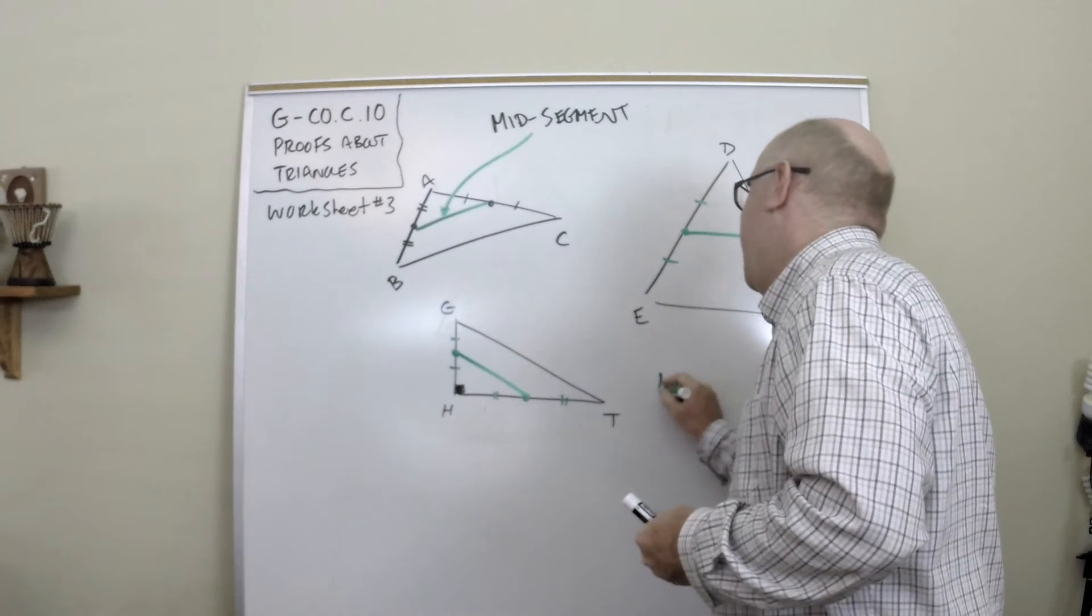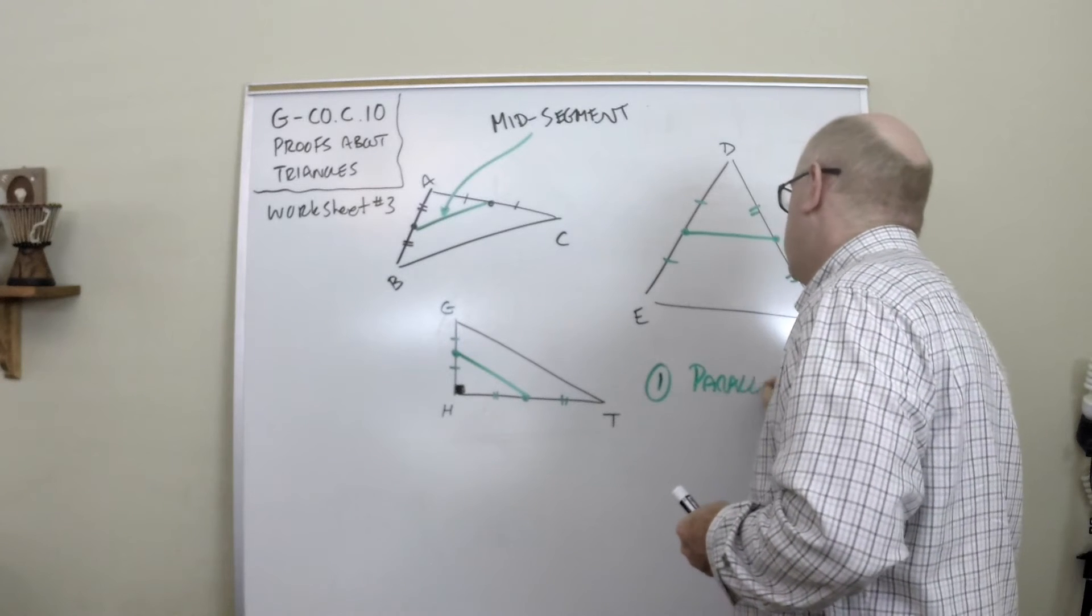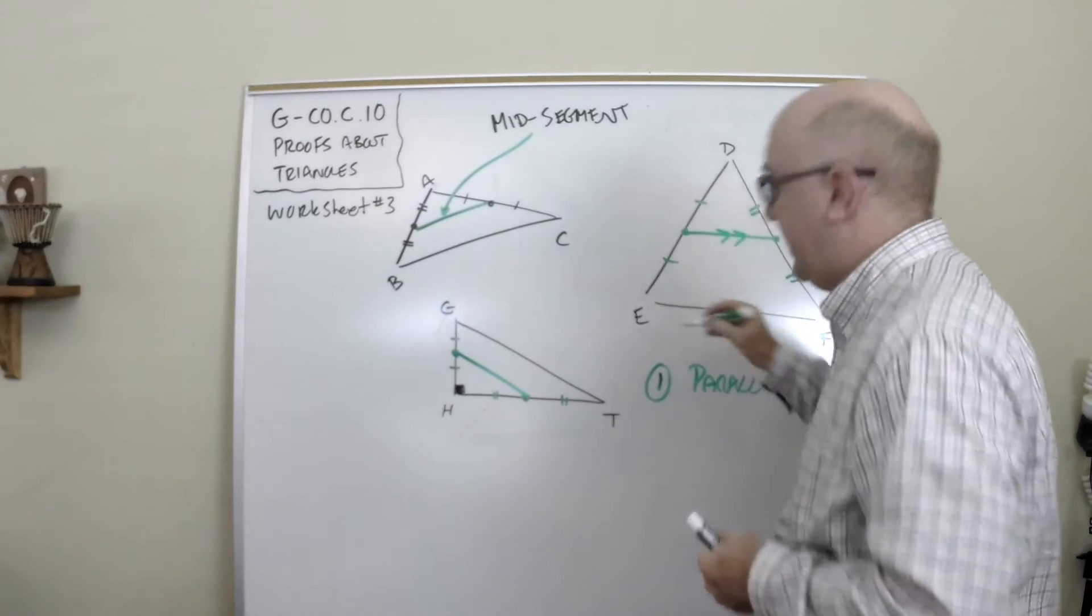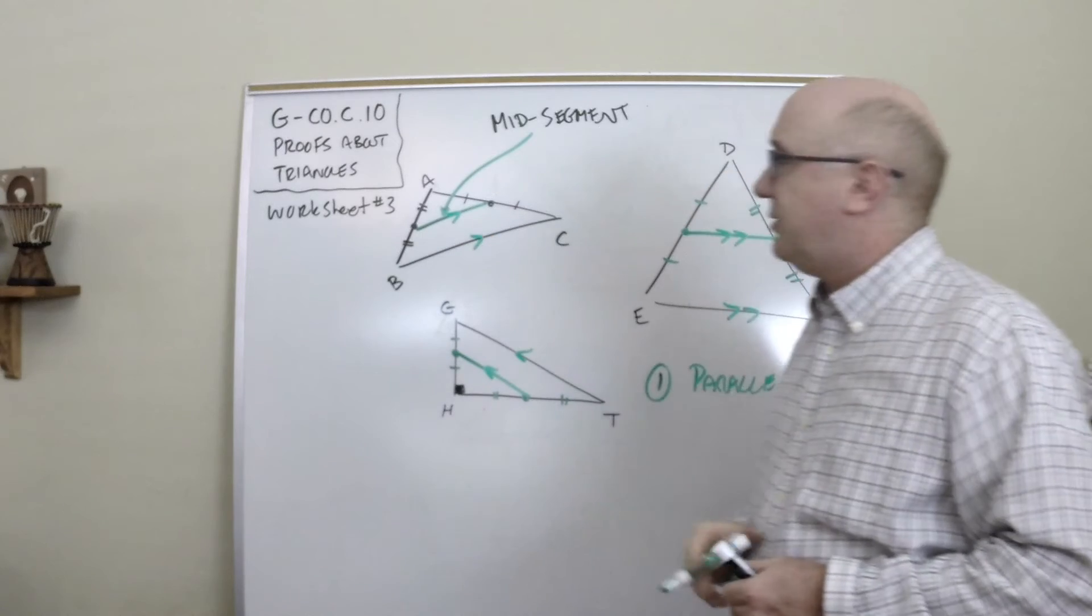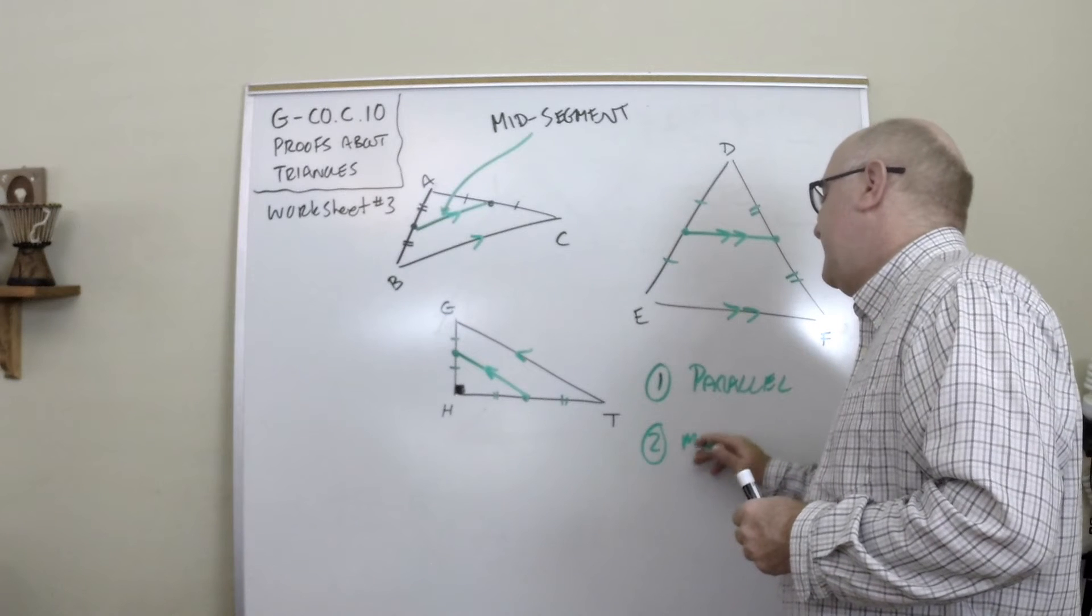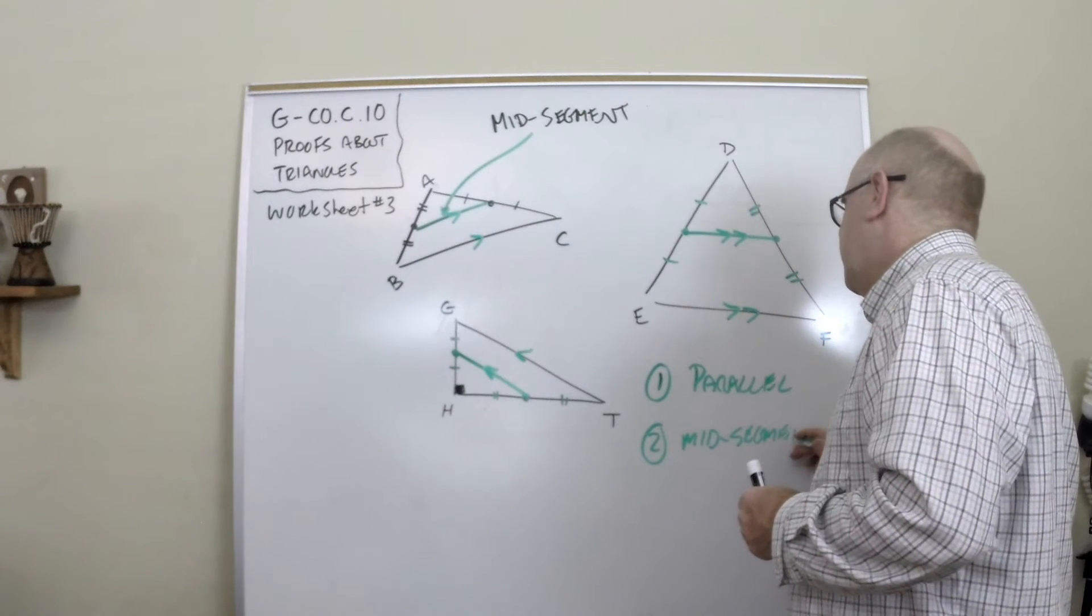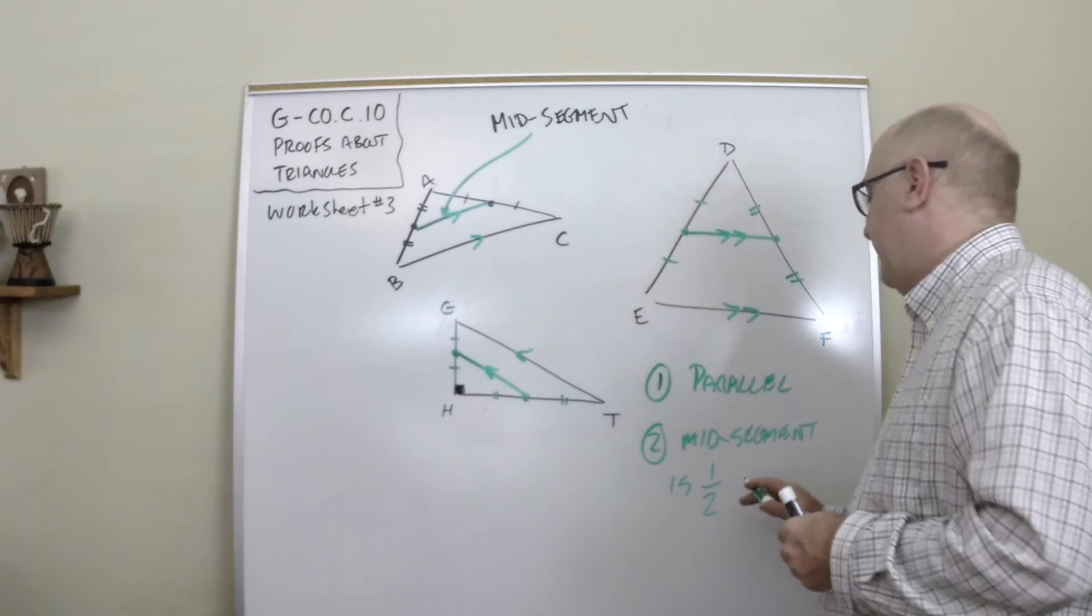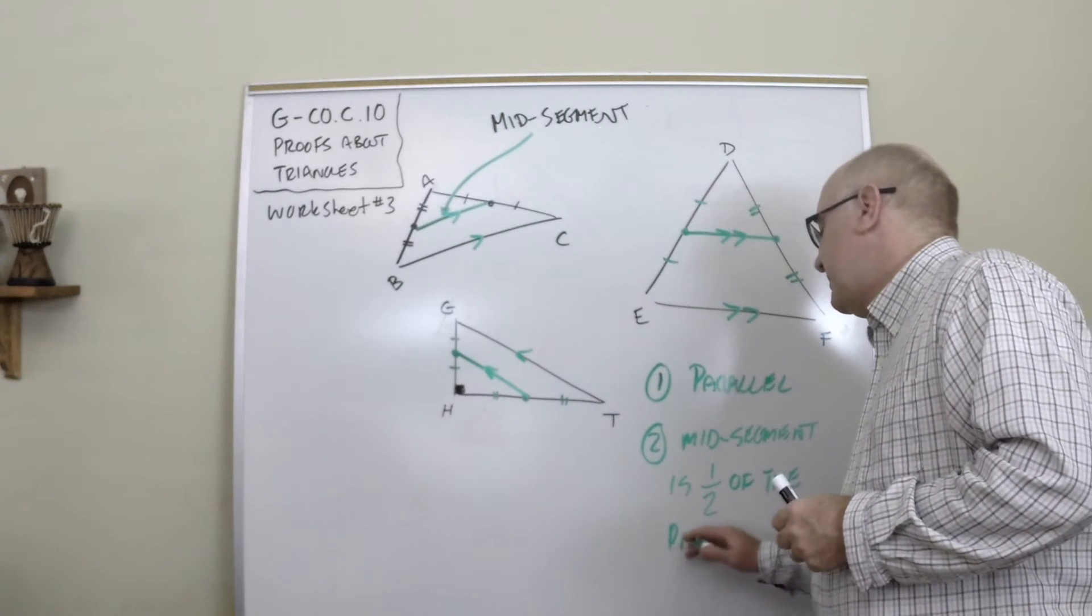But the two main characteristics is that there are parallel lines that are formed, and so this would be parallel with this, this would be parallel to this, and this would be parallel to this. The second thing, which is quite cool, is the mid-segment, in terms of its size, is one-half of the parallel side.